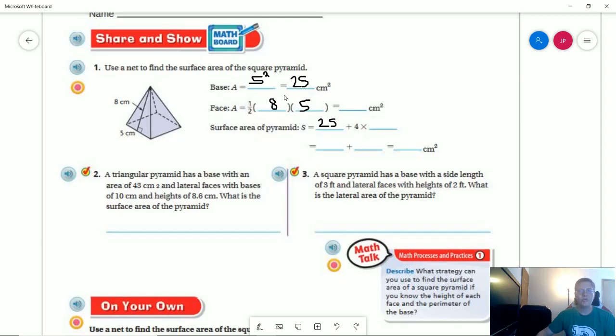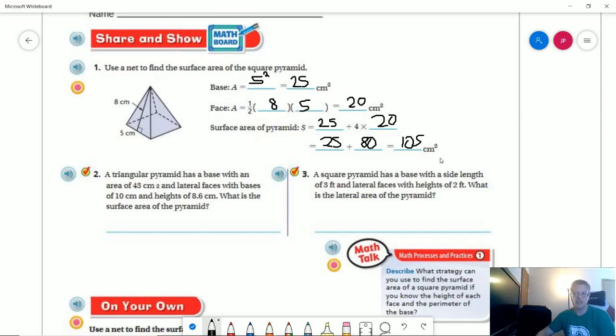And that would give me 40 for here. And then I can cut it in half, so I will do that and get 4 times 5, which is 20. And then I'm going to be doing 4 times 20, which is going to be 80. And then I'm going to be doing 80 plus 25 to get 105 centimeters squared.